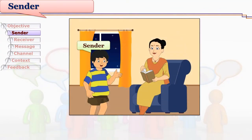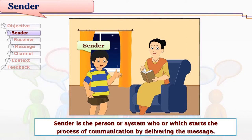Let us take examples about Raghav. Raghav wants to seek permission of his mother for a picnic, so he starts talking with her. Raghav is the initiator of this communication — he is the communicator, the sender of messages. The messages are sent to his mother. So sender is the person or system who starts the process of communication by delivering the message.